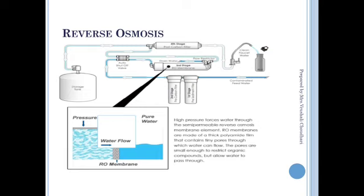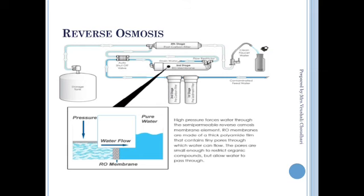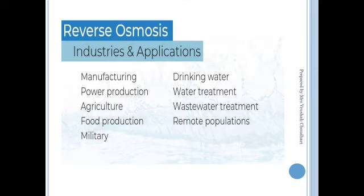This assembly tank is used in industry. The concept of water flow shown here is used industrially for manufacturing, drinking water, power generation, water treatment, agriculture, wastewater treatment, food production, remote populations, and military purposes.